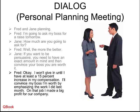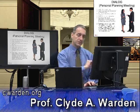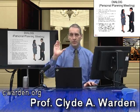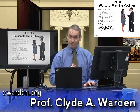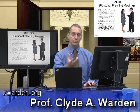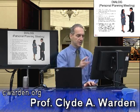Fred says, okay, I won't give in until I have at least a 15% increase in my compensation. I'll convince my boss I'm worth it by emphasizing the work I did last month on that job — I made a big profit for our company. So Fred now has a specific goal of 15%, and he's going to justify that value based on last month's project. We attach a value, we can judge success or failure by that value, and we can convince the boss it's a good value for them too.